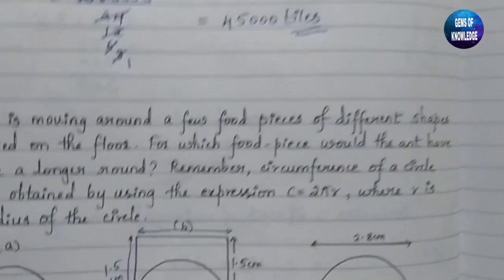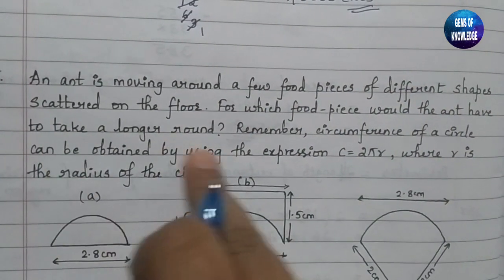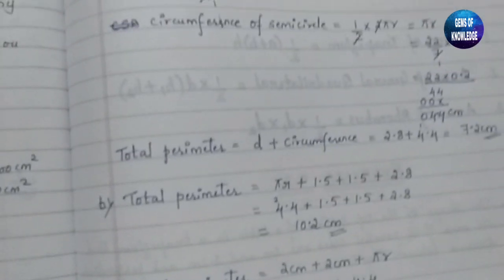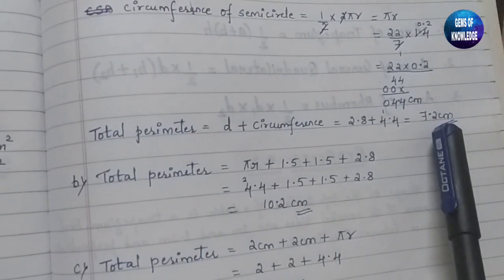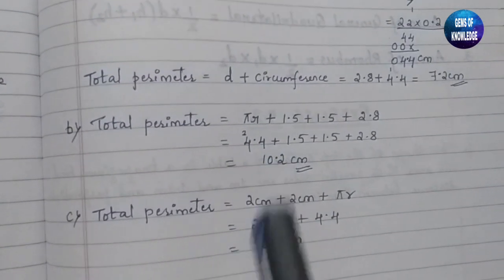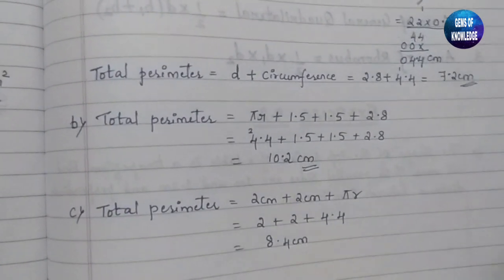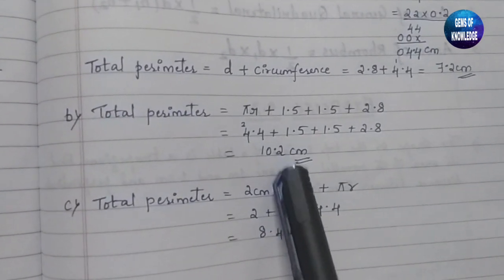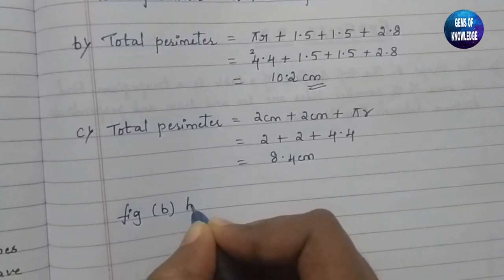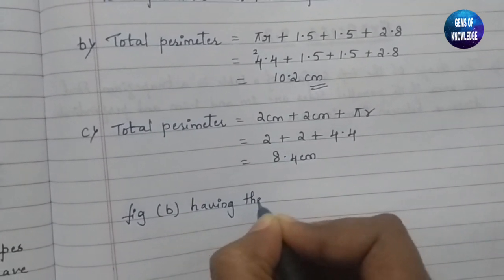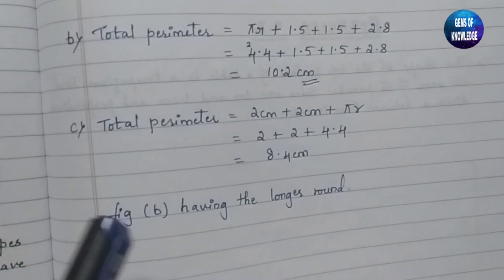So comparing all three figures: figure A has a perimeter of 7.2 cm, figure B has 10.2 cm, and figure C has 8.4 cm. The question asks for which food piece the ant has to take a longer round. Since figure B has the largest perimeter of 10.2 cm, the ant has to travel the longest round for figure B.